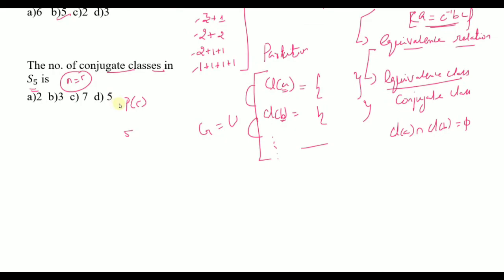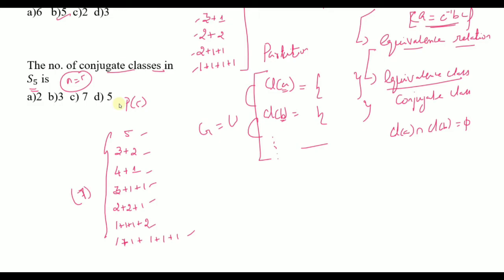The partitions of 5 are: 5; 4 plus 1; 3 plus 2; 3 plus 1 plus 1; 2 plus 2 plus 1; 2 plus 1 plus 1 plus 1; and 1 plus 1 plus 1 plus 1 plus 1. Therefore P(5) equals 7, so the answer is 7.